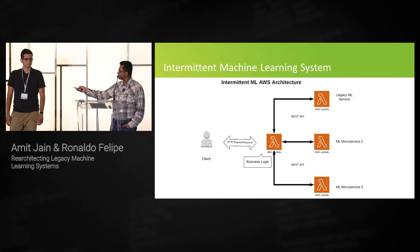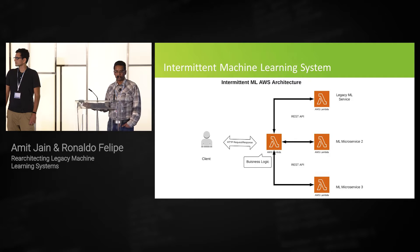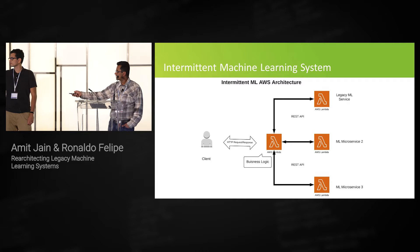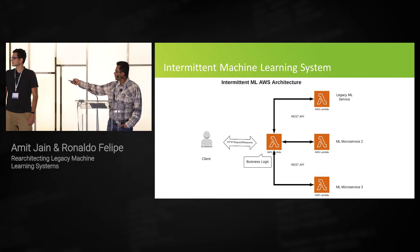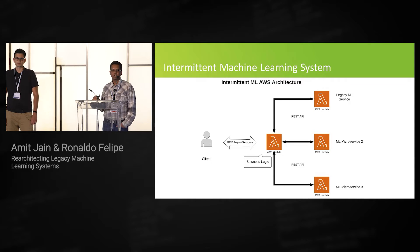This was our intermittent ML system from an AWS perspective. The AWS Lambda for the first one is the legacy API for us. Then there's the API for the second machine learning service with a different model altogether, and then a third service with a different model again. The client hits a new front-end API, and we have a sort of mini microservice model where you hit all three APIs over the REST interface, then add some business logic in the front-end Lambda. Based on your use case, you pick one service, another, or a combination.